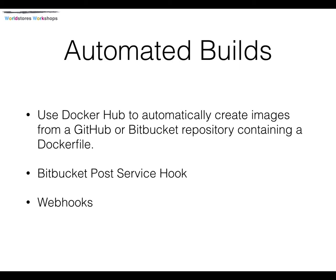These automated builds are there for you to be able to automatically have an image built from a Dockerfile. This is done from a repository on GitHub or Bitbucket. When you set up an automated build, it automatically adds a post service hook to the Bitbucket repository, so that as soon as you commit something to that repository it triggers a post service hook down to Docker Hub, which then rebuilds the image for you. You can also add webhooks to those automated builds themselves.